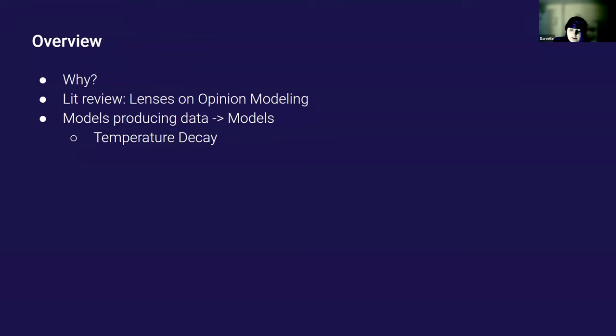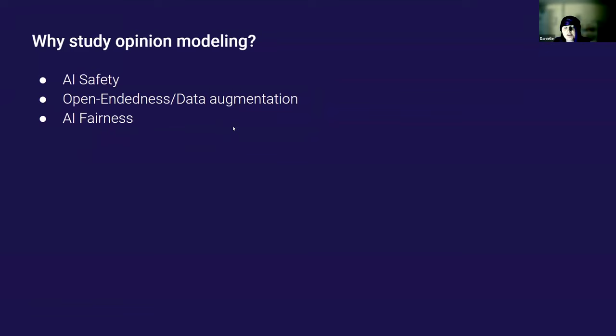Why study opinion modeling? In AI safety, it would be useful to understand how preferences change over time and open-endedness. For data augmentation, we need to understand what processes lead to the data we're sending into our models. In AI fairness, there's concern that as language models generate text, they may affect the opinion ecosystem and how that affects models themselves.